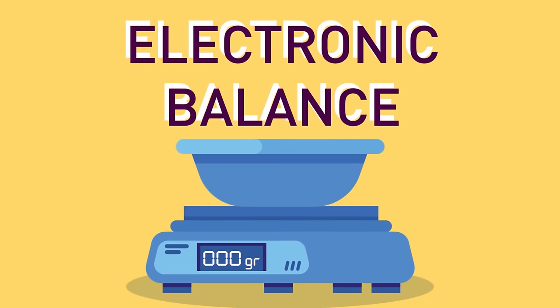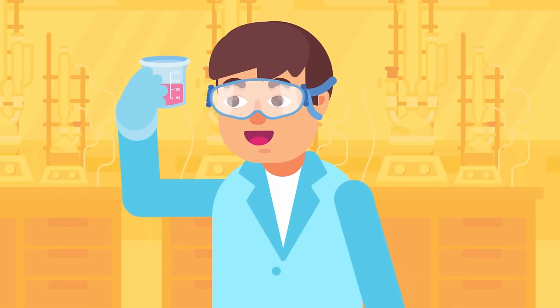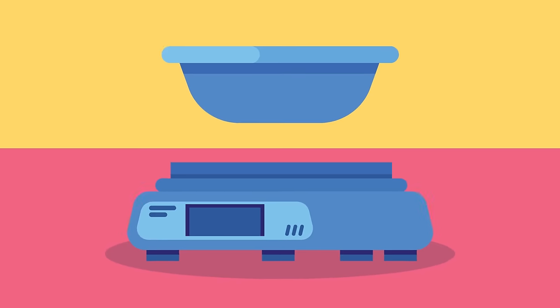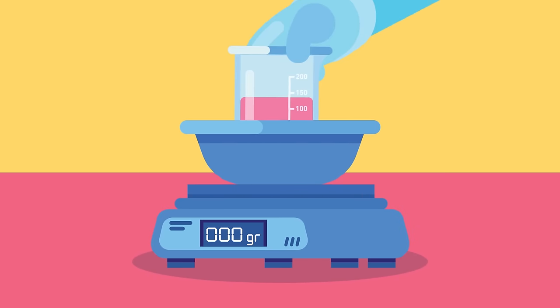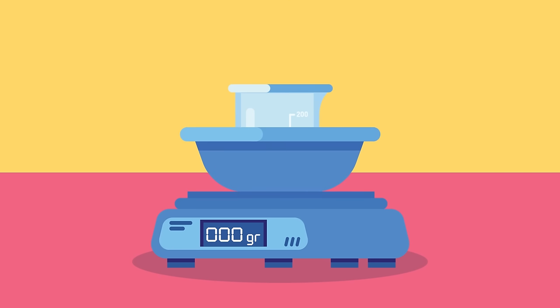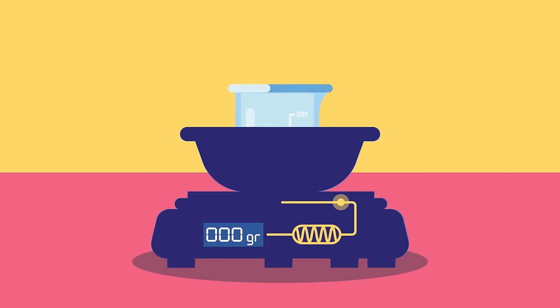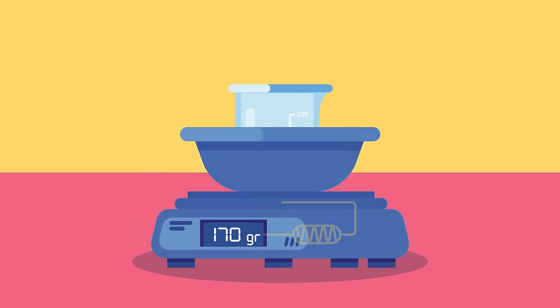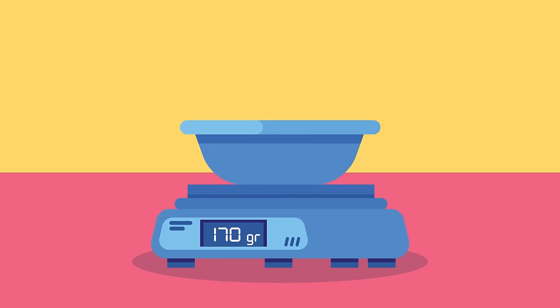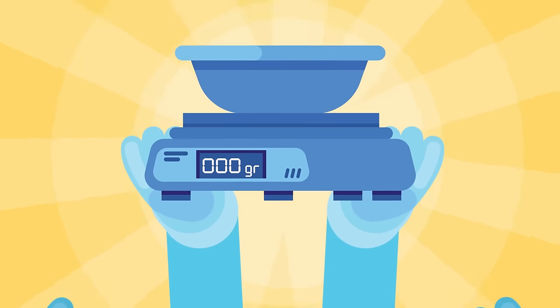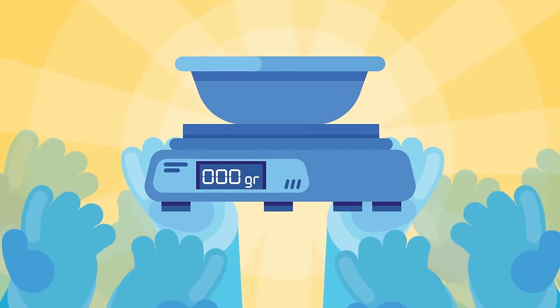Electronic Balance. Used for measuring mass of a substance or chemical, usually consists of a pan on which you can place the substance you want to measure. This generates current proportional to the displacement of the pan due to the pull of gravity, which then translates into the displayed reading. The electronic balance is a simple, yet one of the most important equipment that should be present in any laboratory.